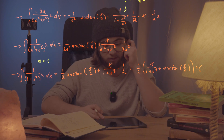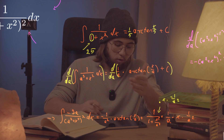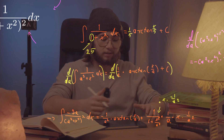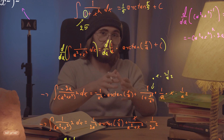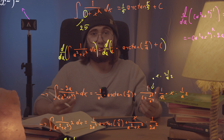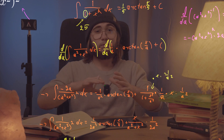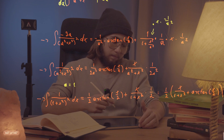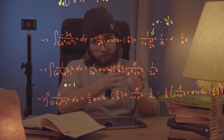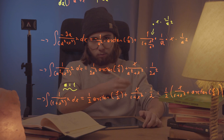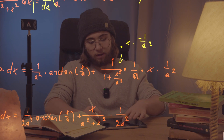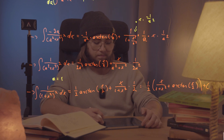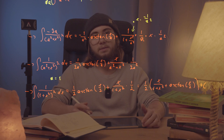Let's recap what we did. We recalled a nice parametrized formula solving a class of integrals — 1 over (a squared plus x squared) — then we took the derivative of both sides with respect to the parameter a, just as Feynman taught us. Miraculously, we got the integral we wanted in terms of a, then set a equal to 1 to get the final result — after also catching a missing chain rule application.